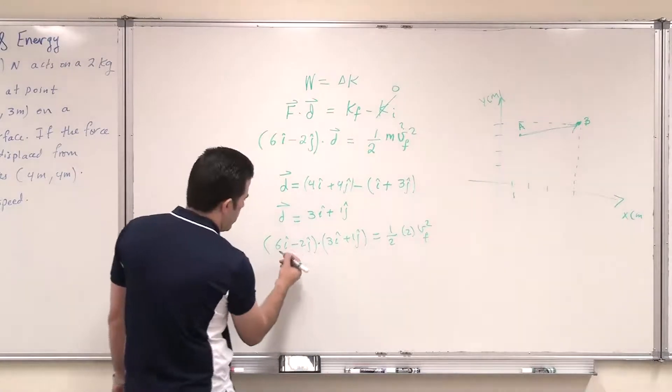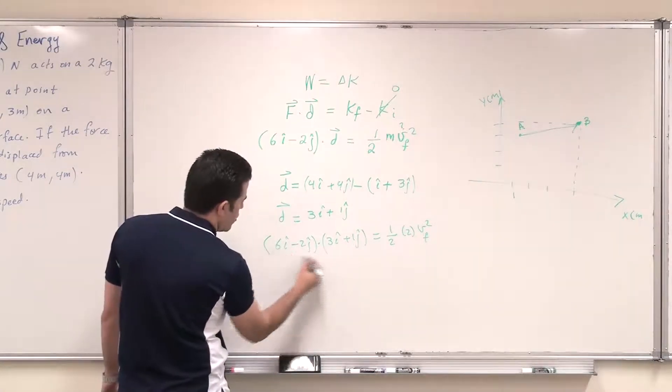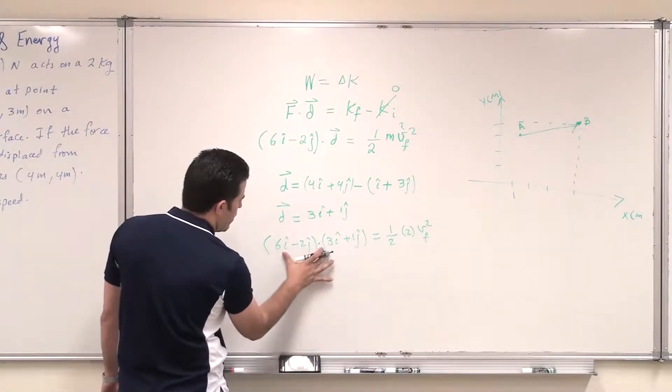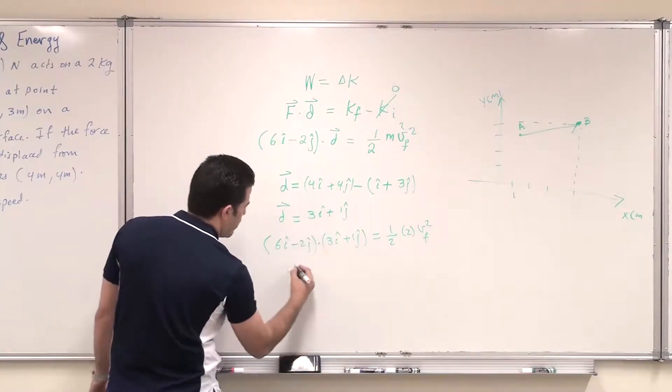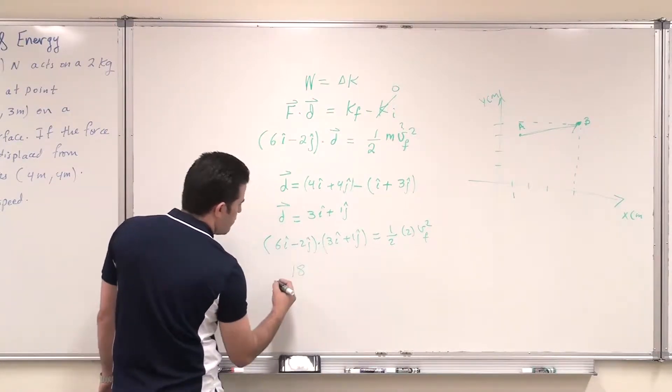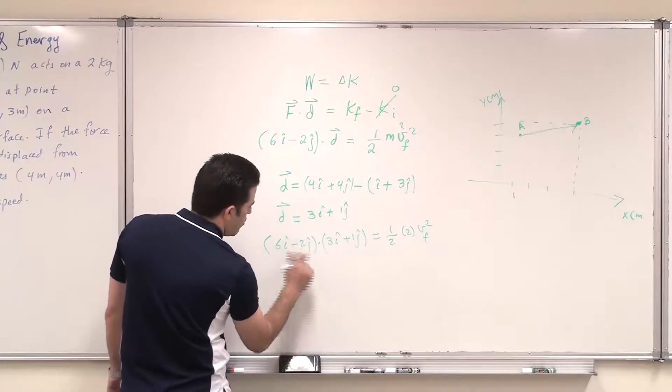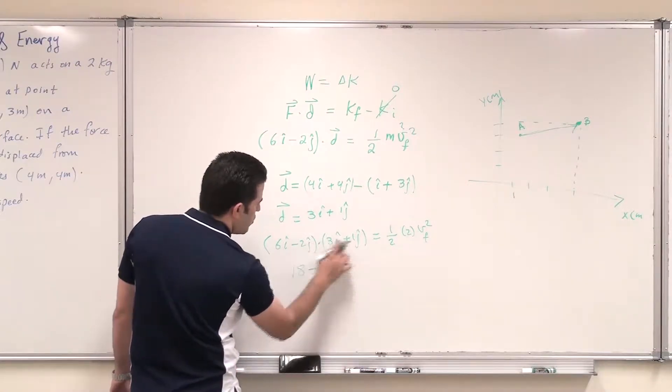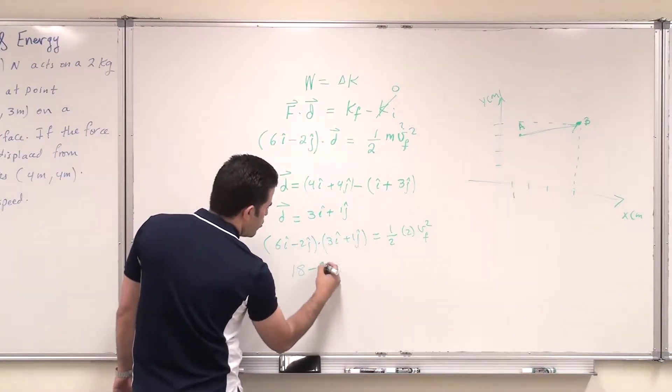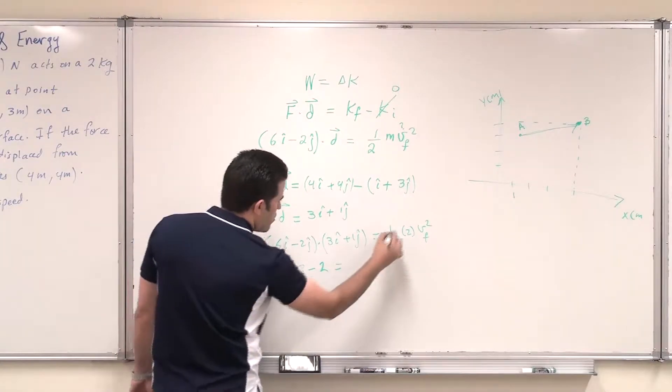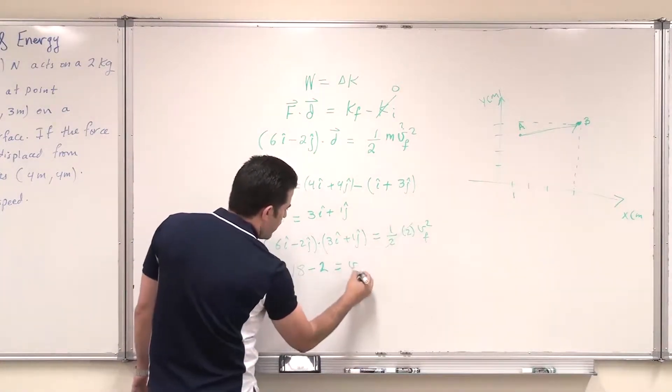So I can multiply it. 6i hat dot product by 3, this will yield a scalar quantity, the i hat multiplied with the i hat. So it is 18. And then the minus 2 by the 1, which is 2, should equal v final squared.